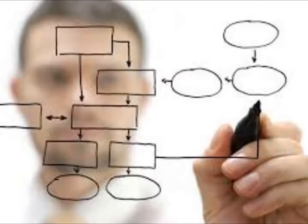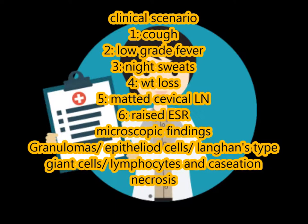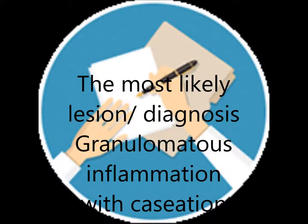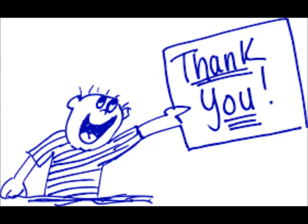We have to link all this information. The clinical scenario is typical TB: cough, low-grade fever, night sweats, weight loss, matted lymph nodes, and raised ESR. The microscopic findings are granulomas, epithelioid cells, Langhans-type giant cells, lymphocytes, and caseation necrosis. So the most likely diagnosis is granulomatous inflammation. Thank you for watching this video. This video has been prepared for you by Pakistan Home School.